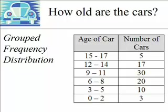For the table shown here, the ages of the cars are grouped using an interval size of 3. The bottom class interval shows us cars from 0 to 2 years of age — there are 3 of them. For cars that are 3 to 5 years in age, there are 10. And for cars that are 6 to 8 years old, there are 20.